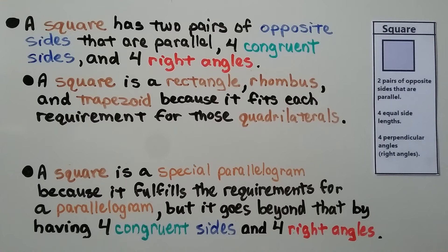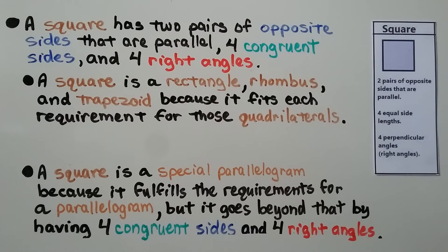A square has two pairs of opposite sides that are parallel, four congruent sides, and four right angles. A square is a rectangle, a rhombus, and a trapezoid because it fits each requirement for those quadrilaterals. A square is a special parallelogram because it fulfills the requirements for a parallelogram, but goes beyond that by having four congruent sides and four right angles.